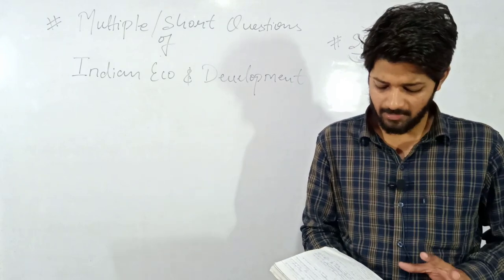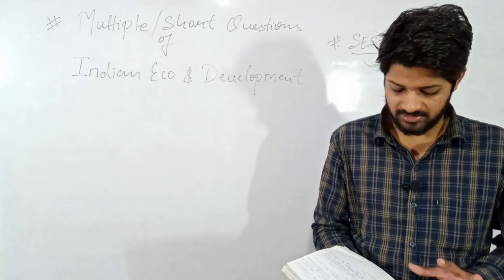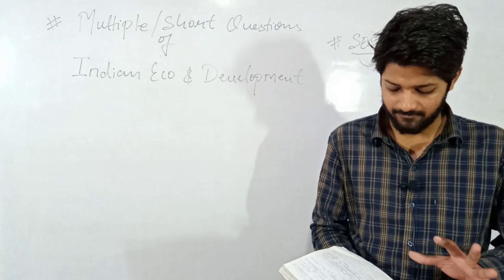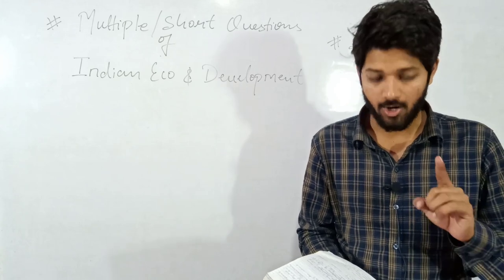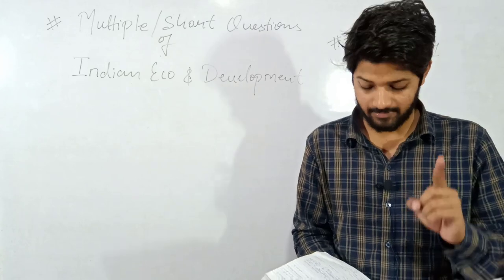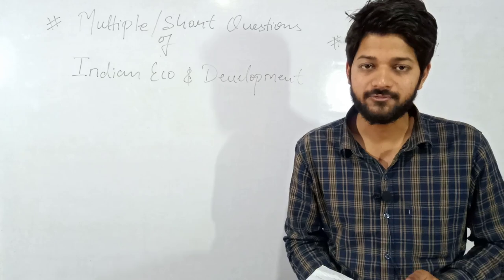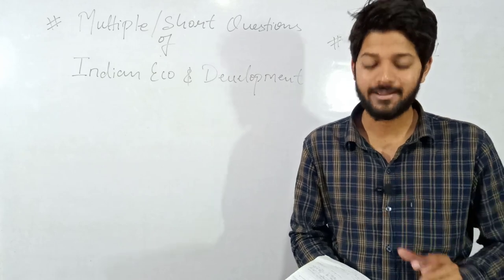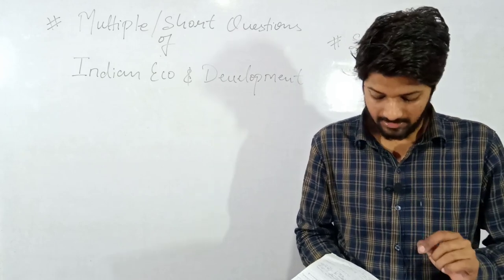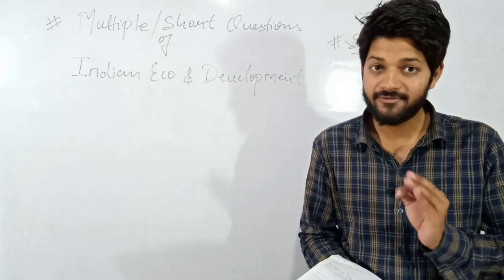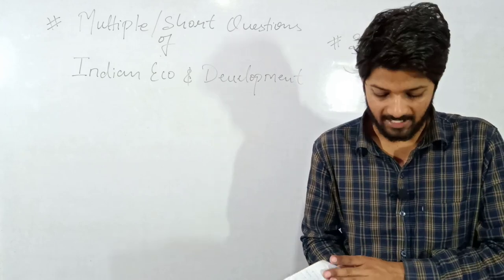The eighteenth question: the Minimum Needs Program was started during which Five-Year Plan? Options: 3rd, 4th, 5th, or 7th Five-Year Plan. The answer will be the 5th Five-Year Plan.